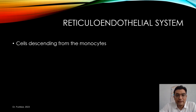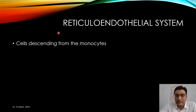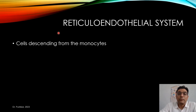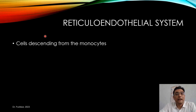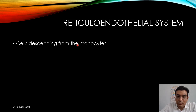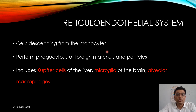Now let's look at the reticuloendothelial system. Nutrients pass through the villi and reach the circulation, but so do many foreign particles, and we must protect our body from them. The reticuloendothelial cells play an important role in this protection. These cells are descendants of monocytes, and like monocytes, they perform phagocytosis of foreign materials and particles such as bacteria.